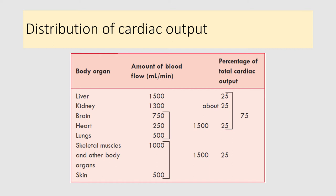The cardiac output enters the systemic circulation and from the aorta is distributed through arteries, arterioles, and capillaries to perfuse various body tissues. In the liver, about 25 percent of cardiac output is provided, which is about 1500 ml per minute — the maximum cardiac output per minute. It is followed by the kidney, receiving about 1260 to 1300 ml per minute, also about 25 percent. So about 50 percent of cardiac output goes to the liver and kidney combined.